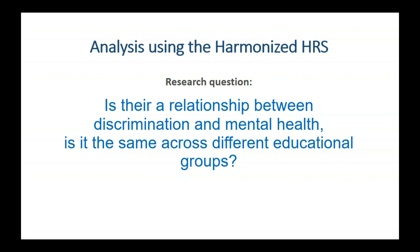Dristen will now use those exact variables — the discrimination items from HRS and ELSA — to walk you through an analysis showing how to take advantage of this data prepared by both teams. If anyone has any questions, feel free to ask. We're going to transition to the Stata portion. Thank you, Alexandra, for teaching us about how these variables came to be added to these studies and incorporated into our harmonized data sets. Alexandra will also be around at the end of the call to take questions.